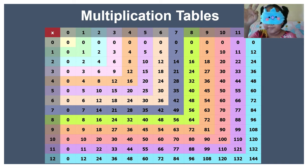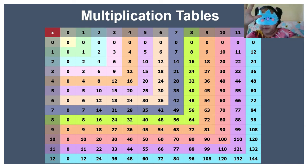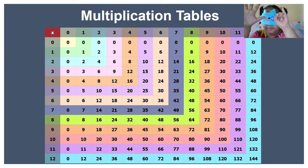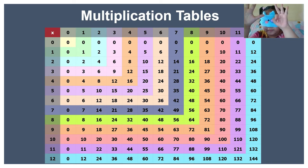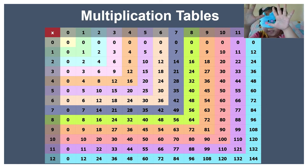4 times 3 equals 12. 4 times 4 equals 16. 4 times 5 equals 20. 4 times 6 equals 24. 4 times 7 equals 28. 4 times 8 equals 32. 4 times 9 equals 36. 4 times 10 equals 40.